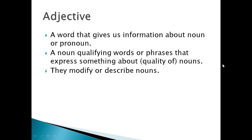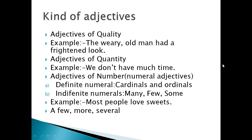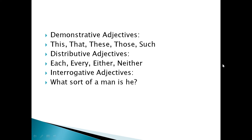In brief, adjectives are qualifying words — words or phrases that express something about a quality of nouns or pronouns. They modify or describe nouns. There are six kinds of adjectives broadly: adjectives of quality, adjectives of quantity, adjectives of number, demonstrative adjectives, distributive adjectives, and interrogative adjectives.